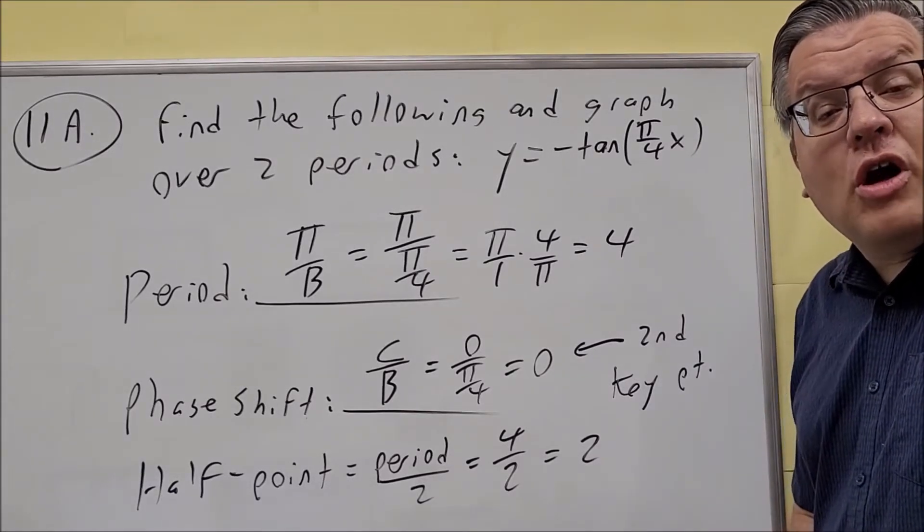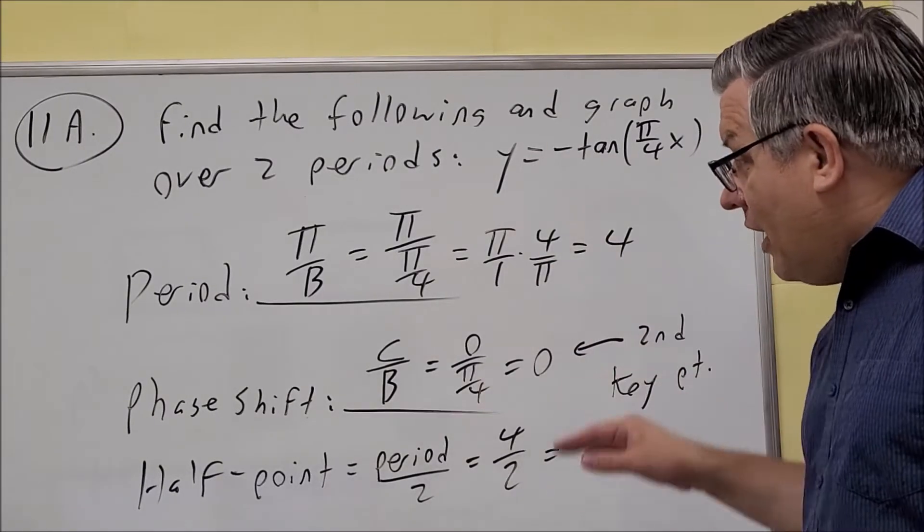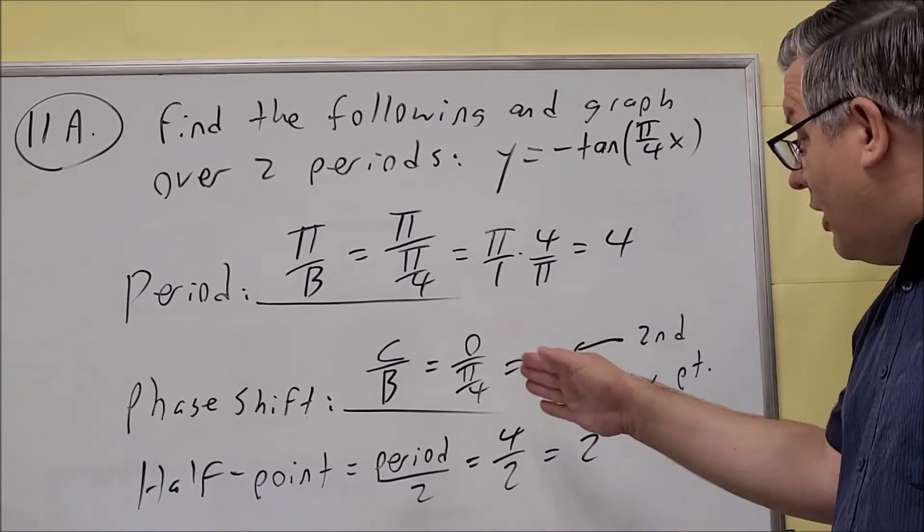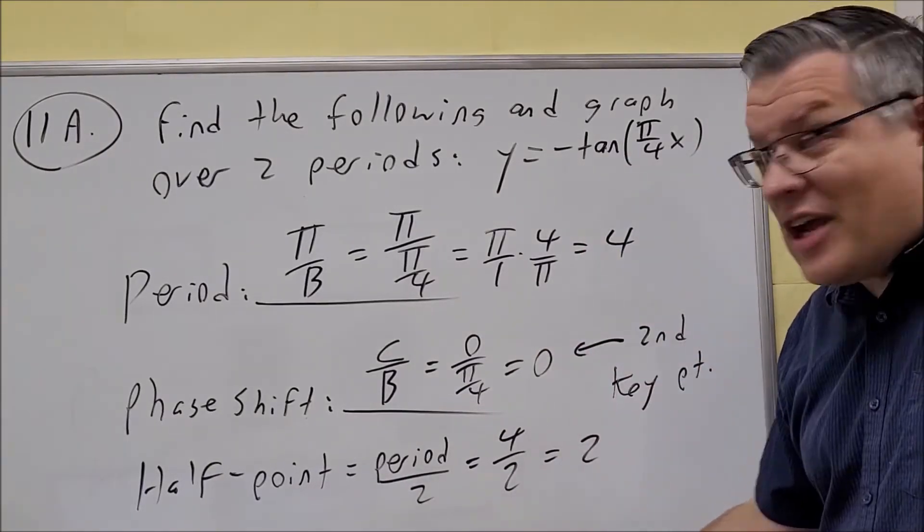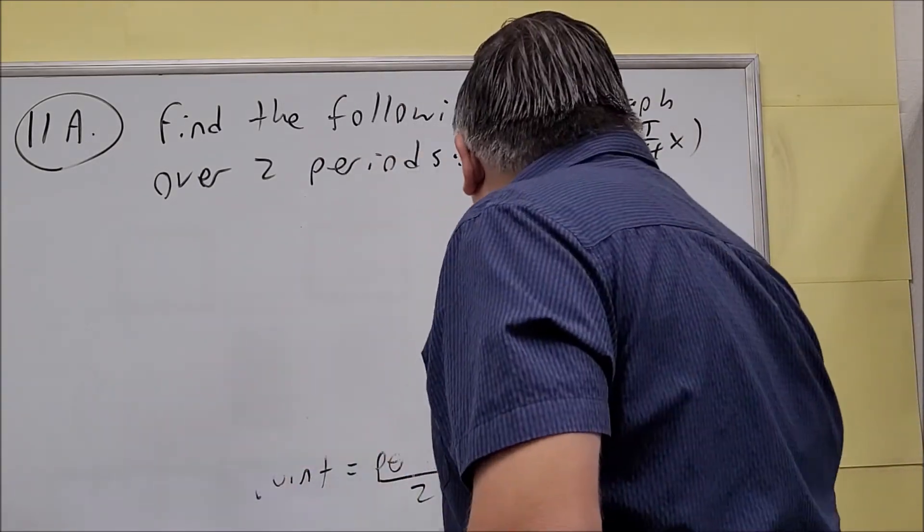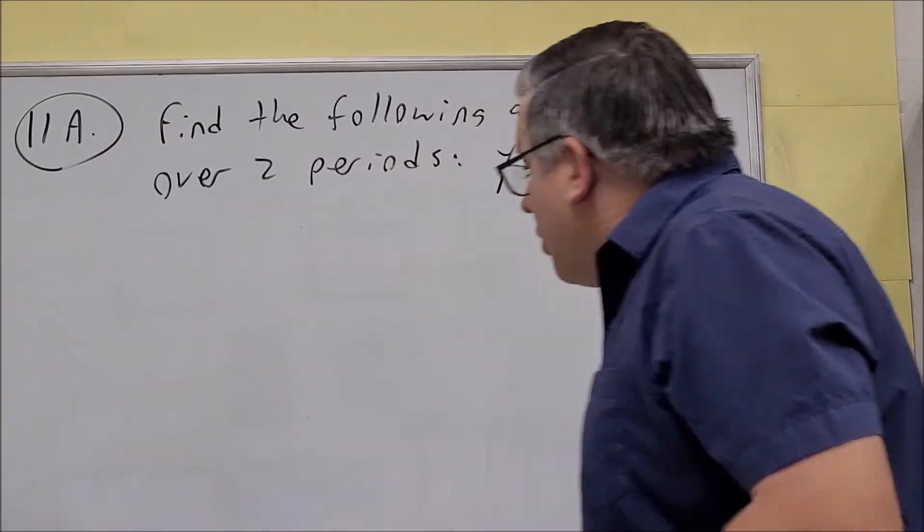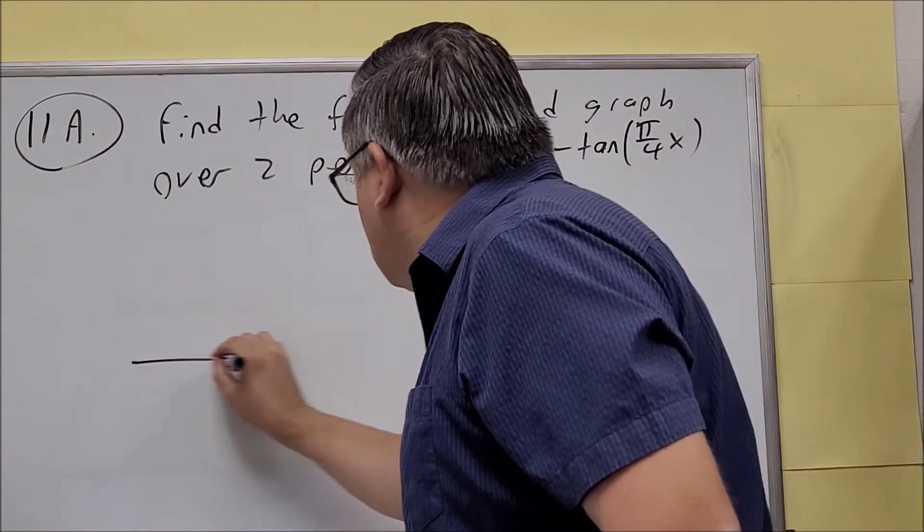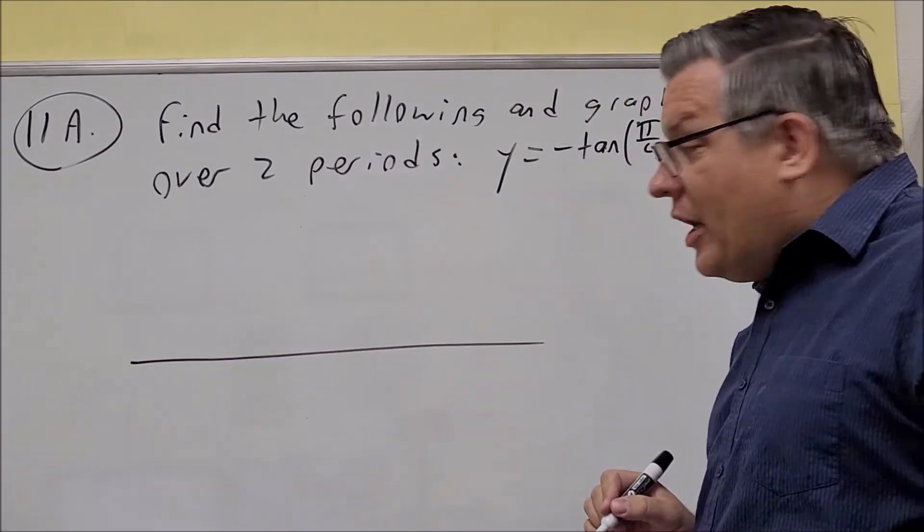So now we're going to put all this together and do the graph. We're going to make a number line, remembering that our phase shift is the second key point.